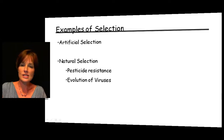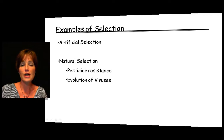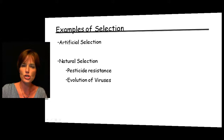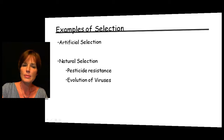Another example is viruses. Every year many individuals get a flu shot, and the reason we need one every year is because the flu virus is changing constantly. Viruses change rapidly because they have a very fast generation rate — with very short generations, they can produce a whole bunch of changes in a relatively short period of time. So what used to be an effective vaccine might not be effective the next year when the virus is slightly different from what it was in the past.